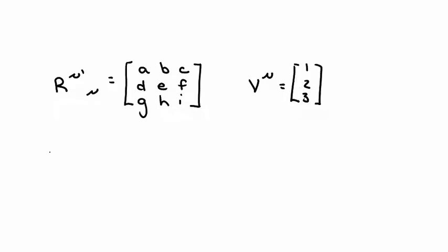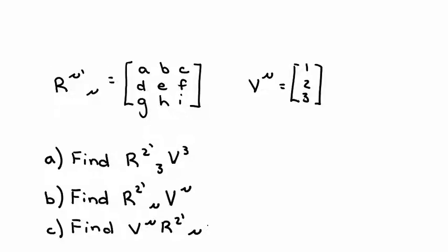Let's take a quick break and do a few exercises. Here, I've written out a 3x3 rotation matrix with elements A, B, C, D, E, F, G, H, I, and a three-component vector with components 1, 2, and 3. Using index notation and NOT matrix multiplication, I want you to find the following. First, R2'3 V3, second, R2' mu V mu, and third, V mu R2' mu.